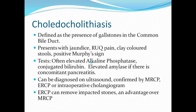The blood tests will often show an elevated alkaline phosphatase and elevated conjugated bilirubin. There may be an elevated amylase if there is a concomitant pancreatitis. This can be diagnosed on ultrasound and confirmed by MRCP, ERCP, or an intraoperative cholangiogram. An ERCP can remove impacted stones, which is an advantage over MRCP.